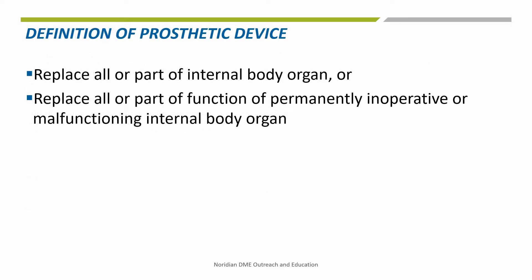Lower limb prostheses fall under the Prosthetic Device Benefit Category. The definition of a prosthetic device is a device that replaces all or part of an internal body organ, or replaces all or part of the function of a body organ.